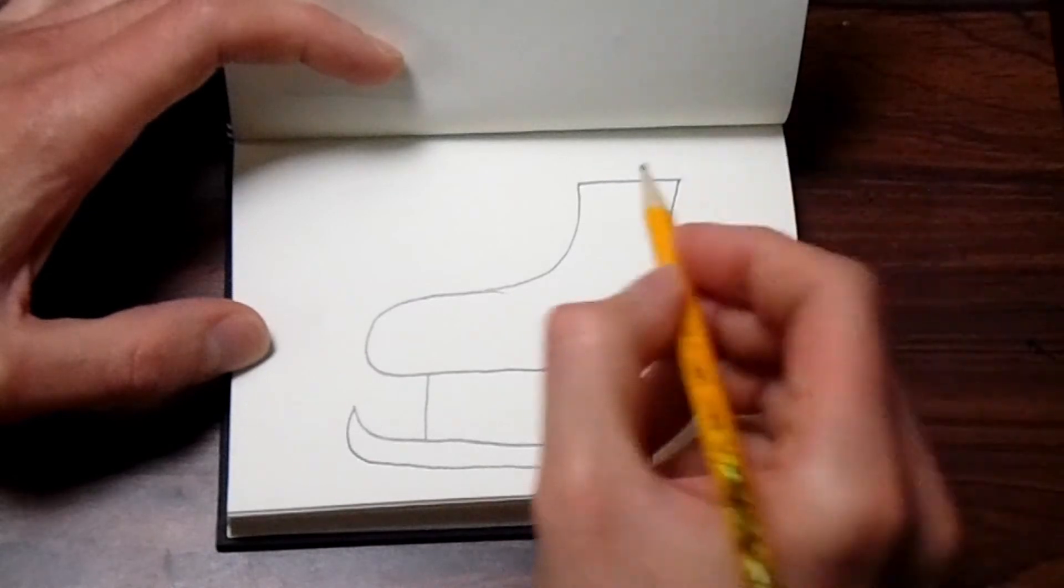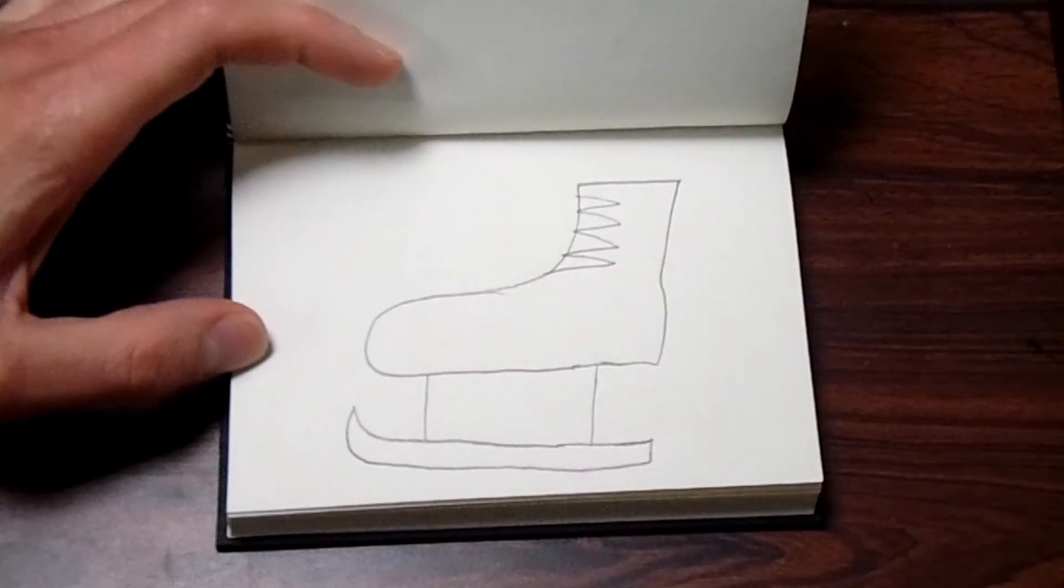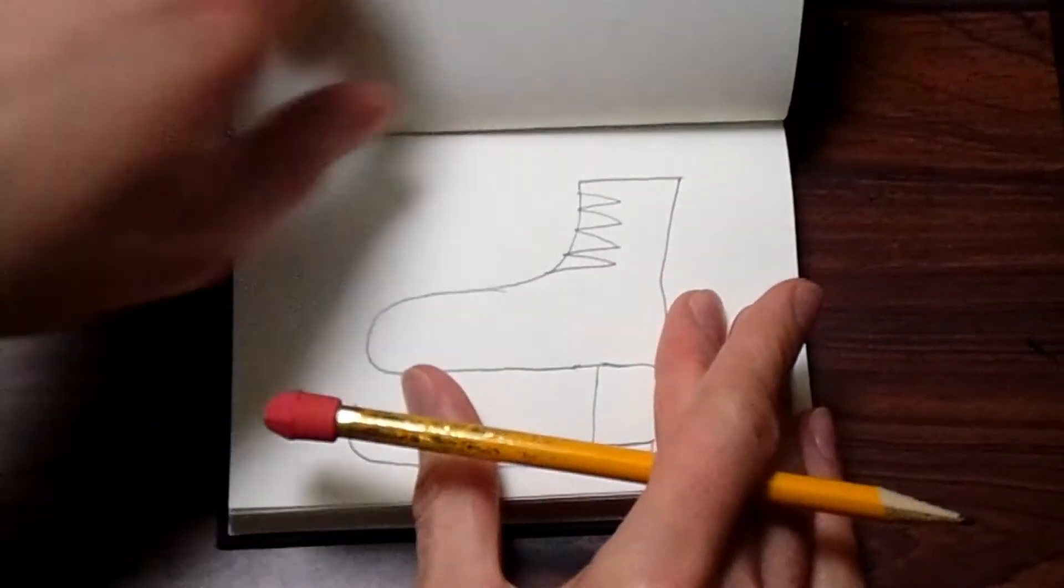And now we're just going to put some laces for details, so let's add some zigzags. Like that. And there you have an ice skate made out of the letter I.